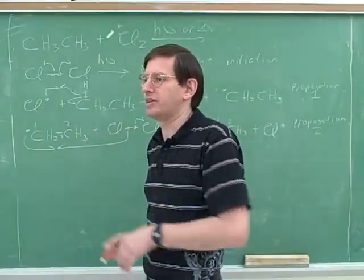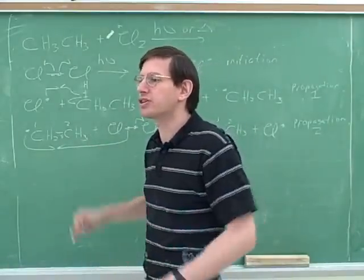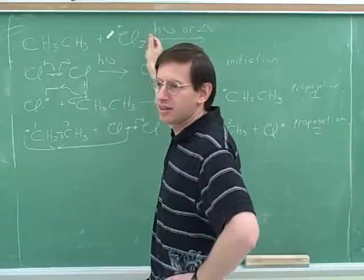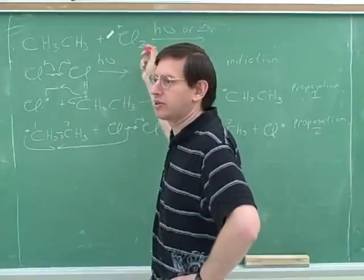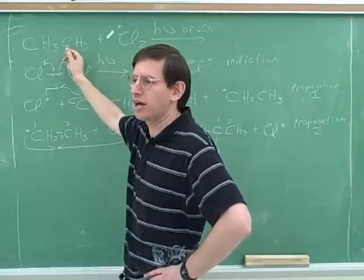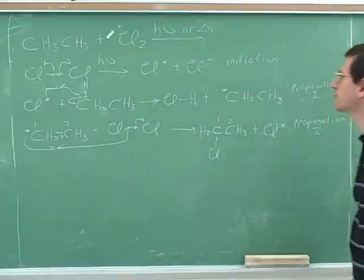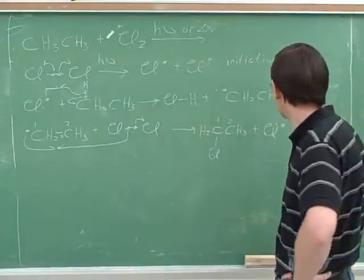If you're doing a predict the products problem and the starting material has no functional groups, it's pretty much got to be this radical chain halogenation, because that's the only thing you're going to learn that you can do to straight hydrocarbons, to straight alkenes. Again, this will work with either heat or light.